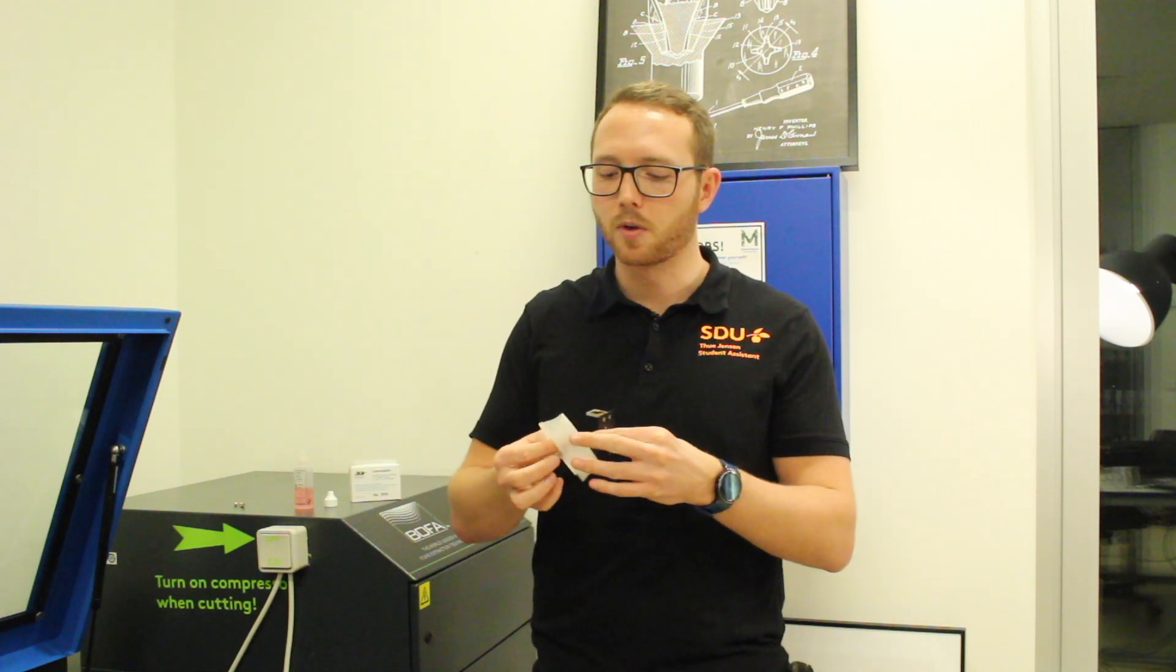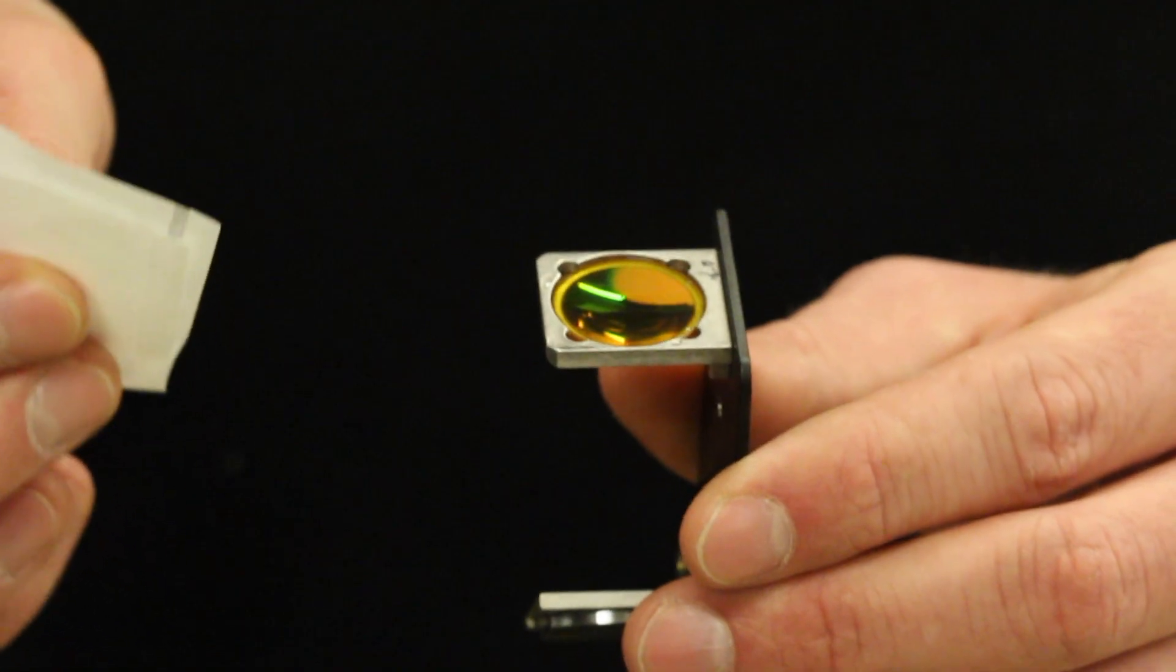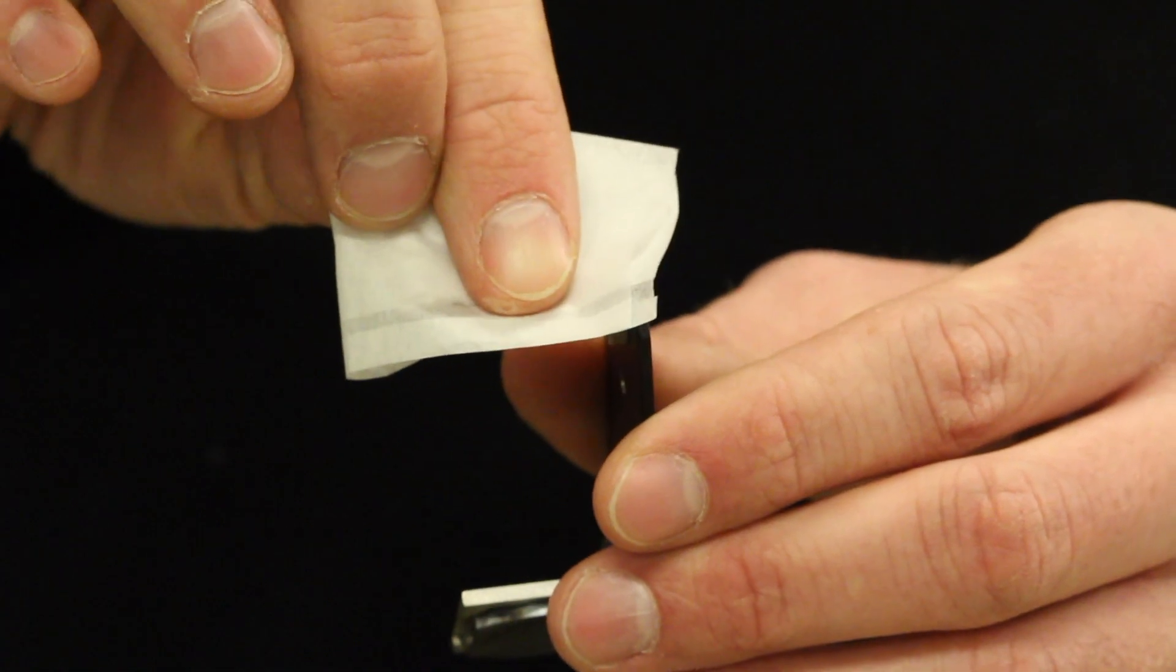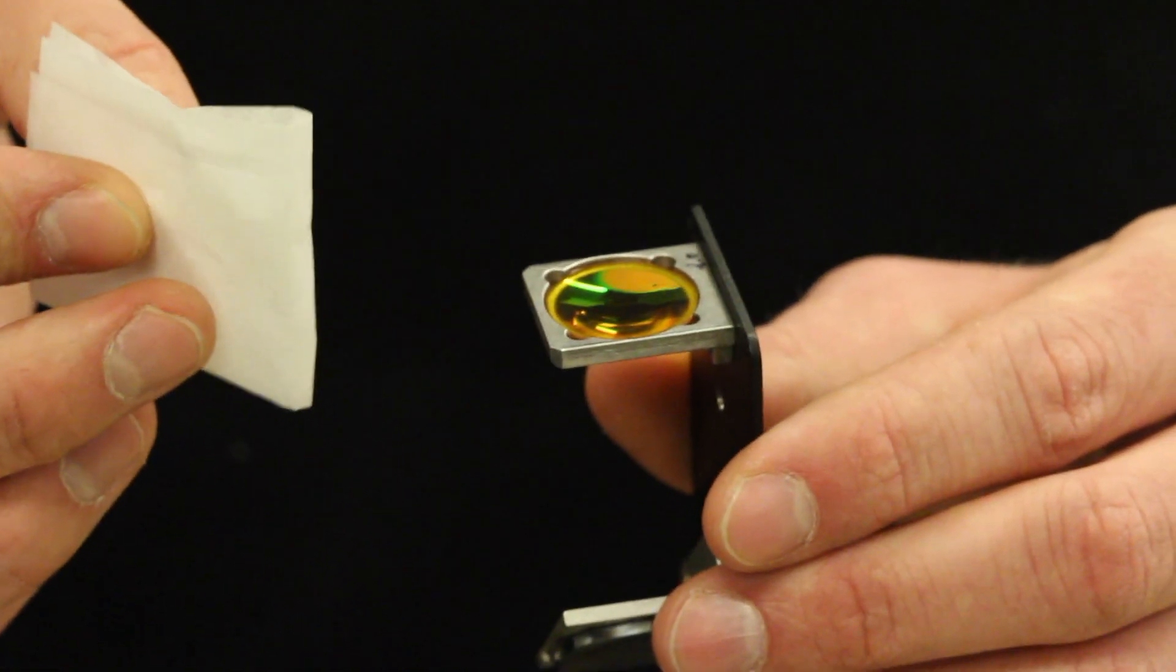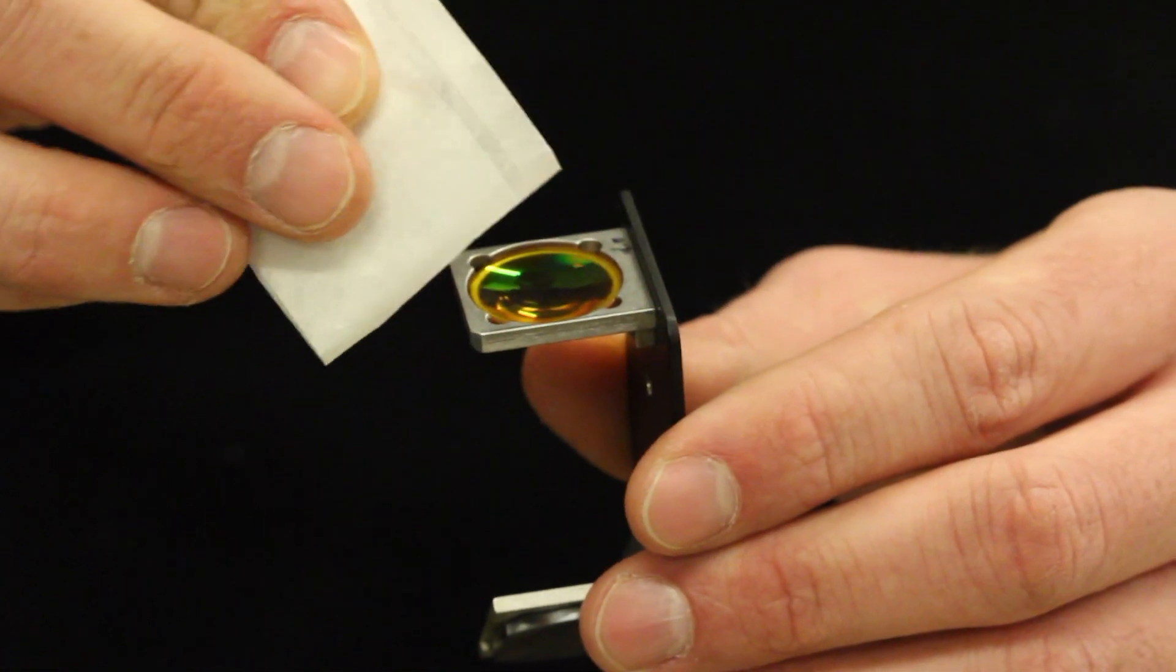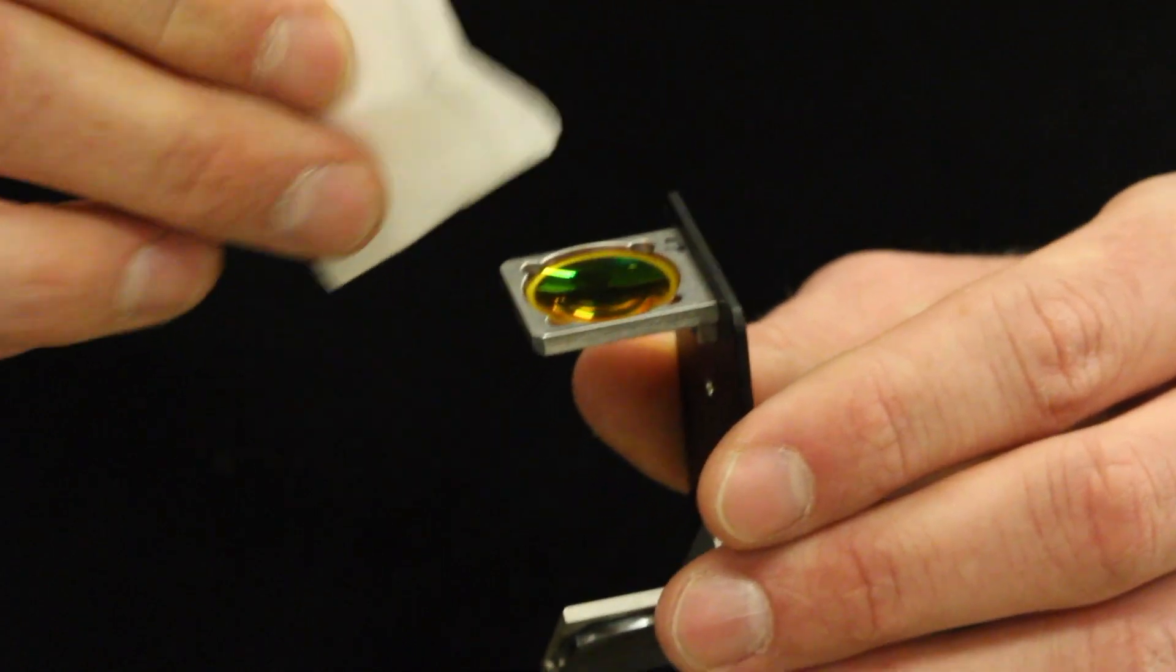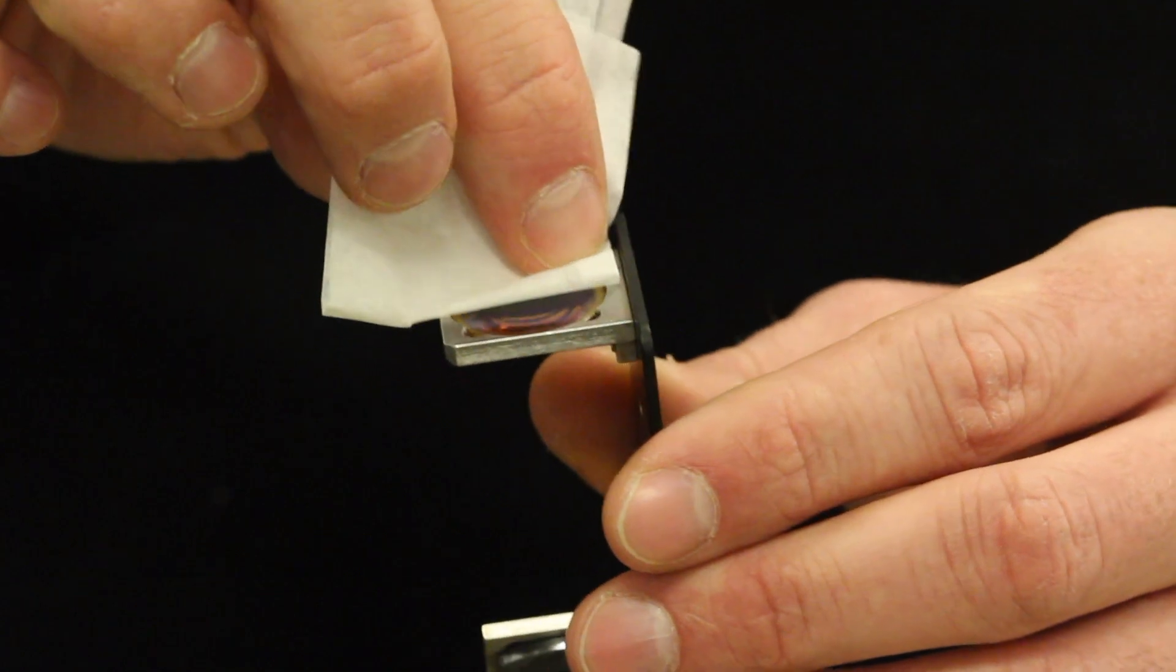What you do is, you fold the lens paper twice like this. When using the paper, it's important that you do it very gently. First, you'll do a wipe like this. And then it's important that you turn the paper and use a different spot so you don't apply the same dirt again to the surface. It's also important that you remove all the liquid from the lens.